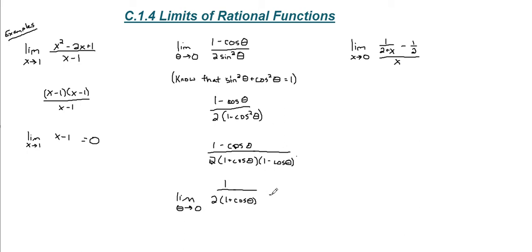Cosine of theta is 1, 1 plus 1 is 2, 2 times the 2 gives us a limit value of 1 fourth.